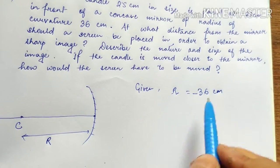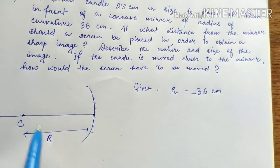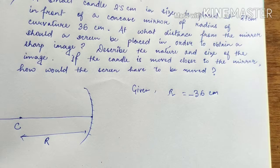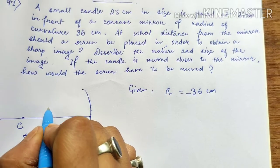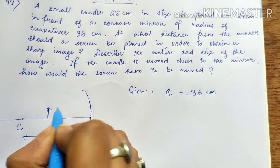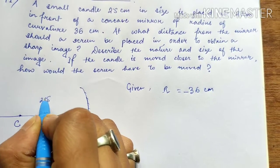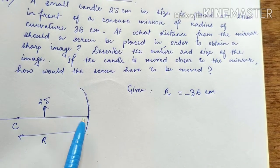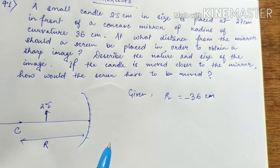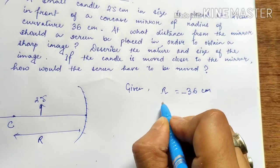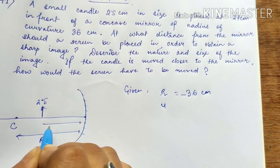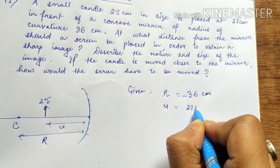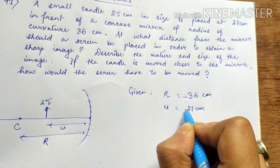We have a minus sign in this direction. The candle size is 2.5 cm, the mirror is 27 cm away. So the object distance U is 27 cm, which is taken as minus sign.